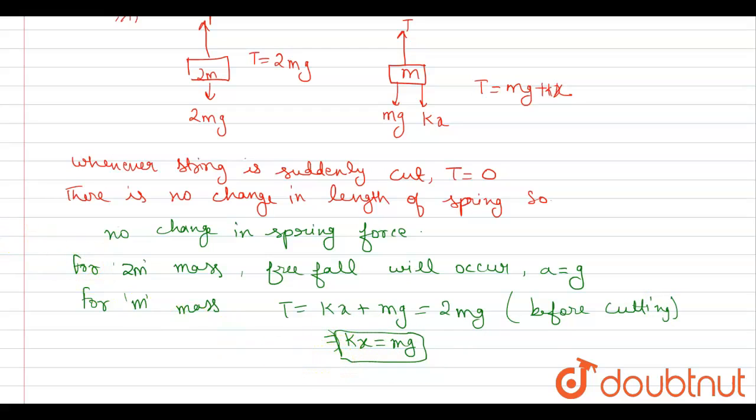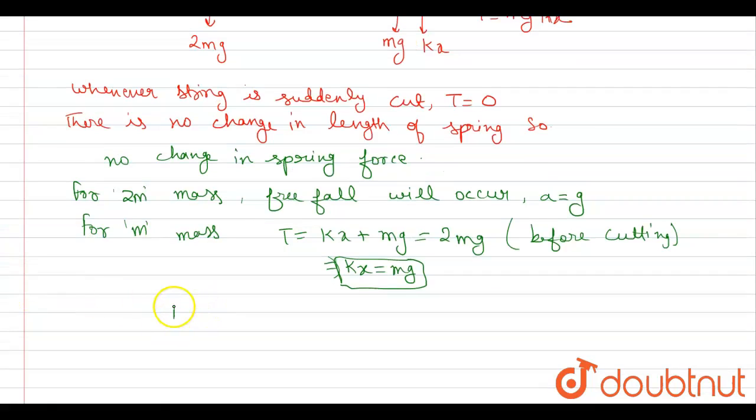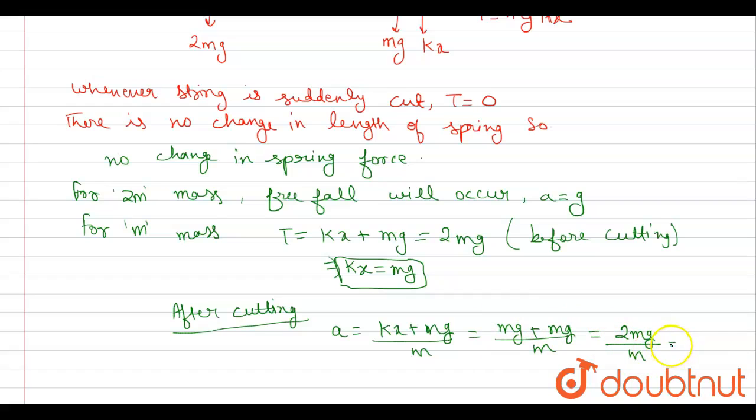After cutting, acceleration is equal to kx plus mg upon m. From above equation, kx is equal to mg, so mg plus mg upon m which equals 2mg upon m which equals 2g.